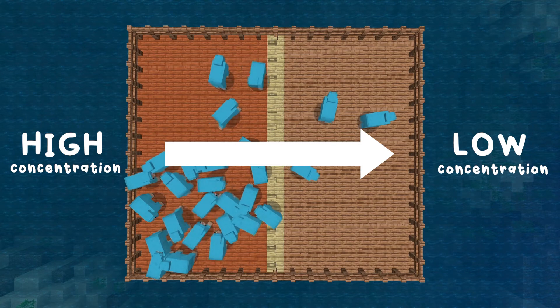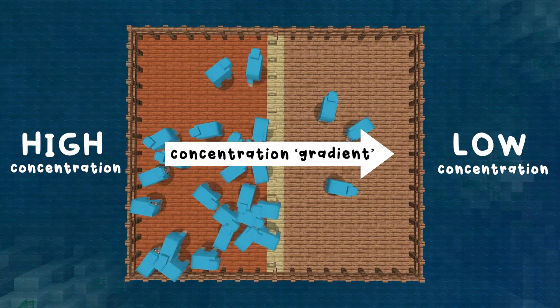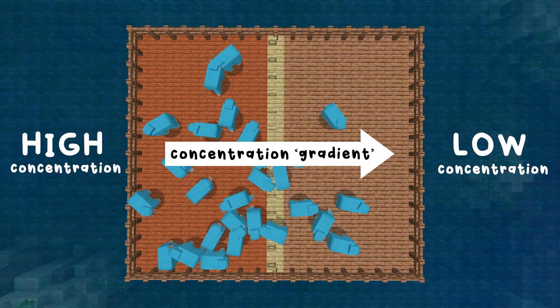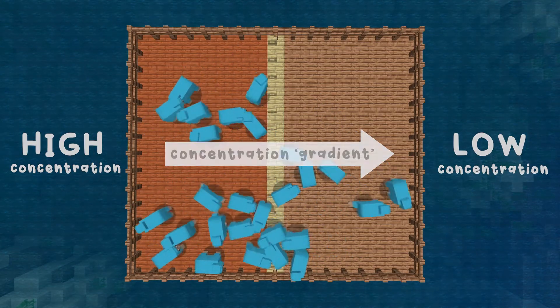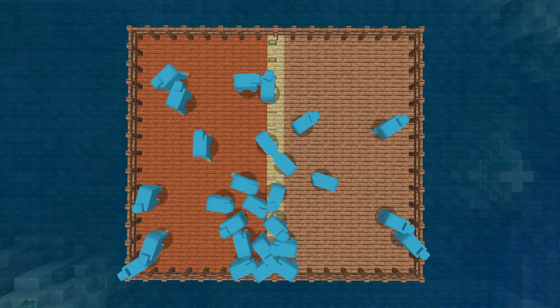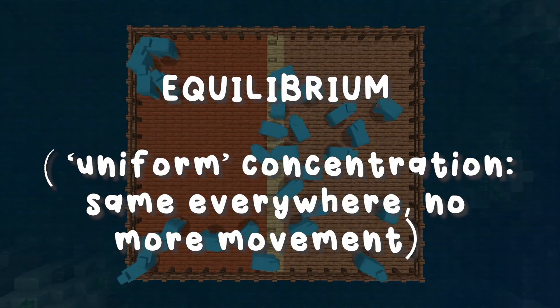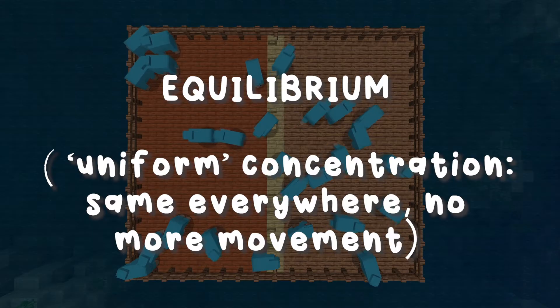We can say that particles move down the concentration gradient on their own. We use the word gradient because it's like a ball on a hill—it will roll down the hill by itself. The particles spread out until the concentration is the same everywhere, and the whole room semi-stinks. We say that the system has reached equilibrium.